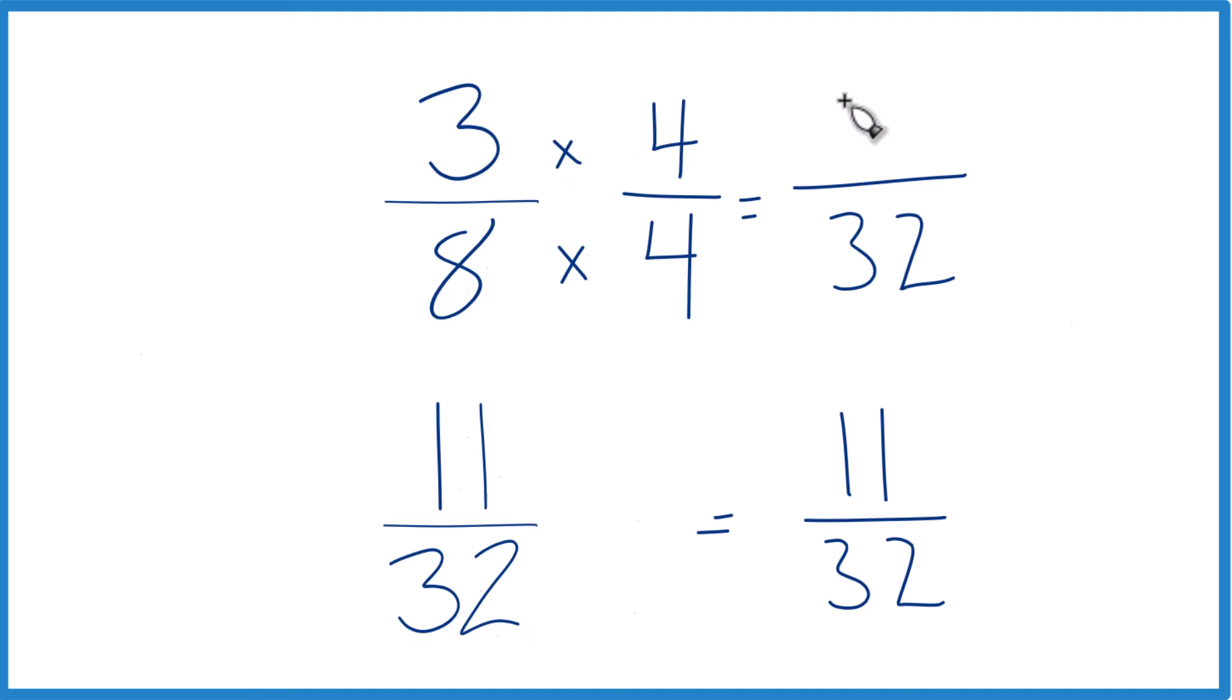3 times 4, that's 12. So now we have the same denominator. We can just compare the numerators to figure out which one's larger. So 12's larger than 11, so 12 32nds is larger than 11 32nds.